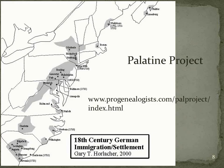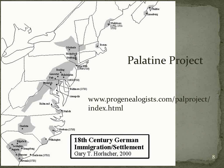To give you a feel of where they settled, this is a map from the progenealogist.com website, put together by my colleague Gary Horlacher, showing where they settled in the 18th century — the 1700s. You'll see they didn't miss too many states. There's a large swath through the Hudson Valley in New York, through much of southeastern Pennsylvania, into the western parts of Virginia, and down even into the Carolinas.